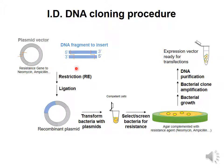We take the DNA fragment of interest that we want to express and cut it with restriction enzymes. The restriction enzymes need to be the same in both elements — the plasmid and the DNA fragment.